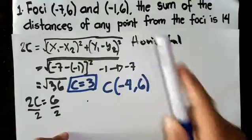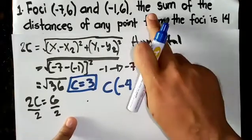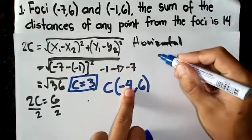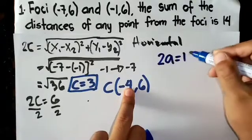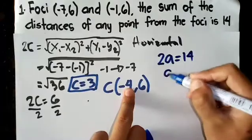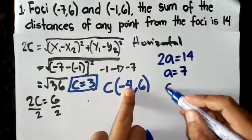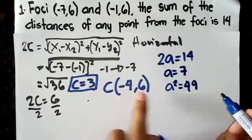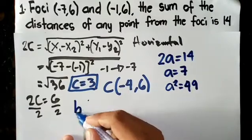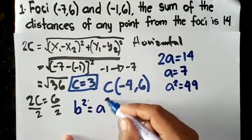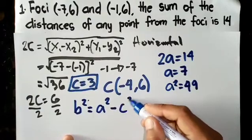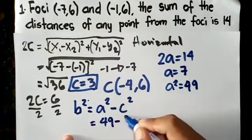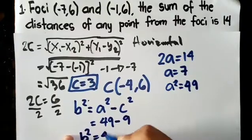The sum of the distances of any point from the foci is 14. If you could recall the definition, the sum of the distances of any point of the ellipse from the foci is 2a. So 14 can be equated to 2a. Divide both sides by 2. So a is 7, or a squared is 49. So how do you get b? If you could recall, b² equals a² minus c². What is the value of a²? 49. Minus c², what is c²? 3² is 9. So b² is 40.